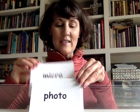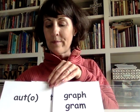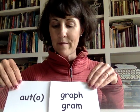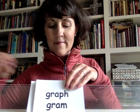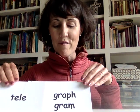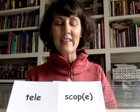All right, now let's put these together. If I have photo, I can put it with — what's my word? Photograph. All right, next one. Put it together: autograph. Put it together: telegraph. Put it together: telescope.